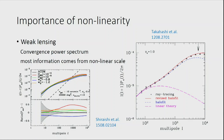If you look at predictions for different dark energy models — for example f(R) gravity versus a constant dark energy equation of state — all these lines are different and you want to distinguish between them. On large scales there is cosmic variance because you can only observe a finite number of modes, so error bars are large. Linear theory can only be trusted up to about l = 100. The interesting differences between models happen at nonlinear scales, so you really need to understand nonlinear clustering.